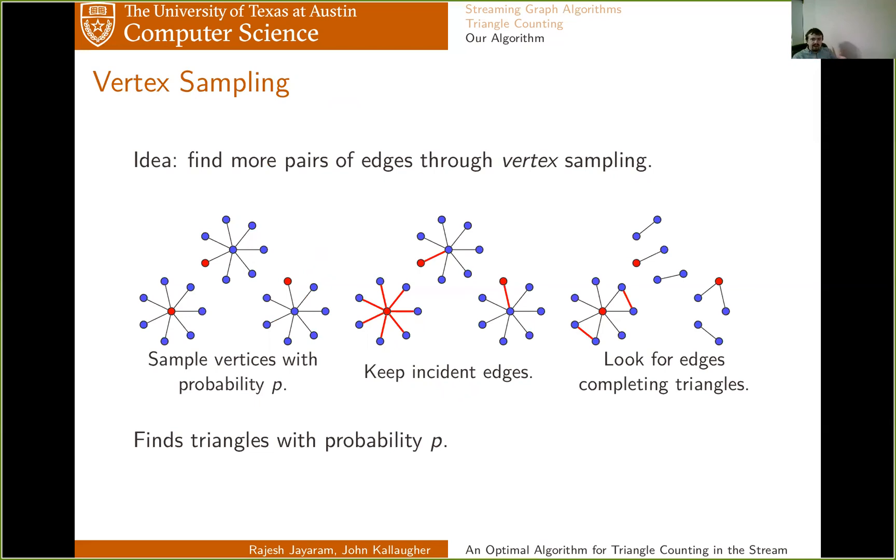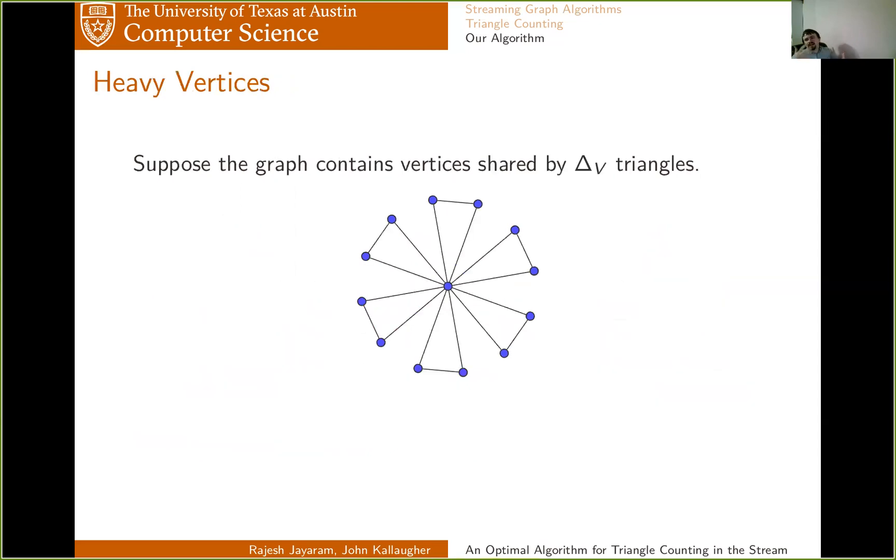Well, now you're finding triangles with probability P, and you're still only keeping edges with probability 2P. So that seems great. But the problem is that now, if you have many triangles sharing a vertex, you'll either get all of them or none of them. So your variance increases, the more triangles share a vertex.